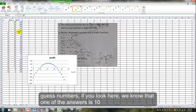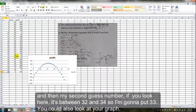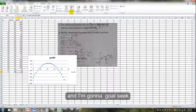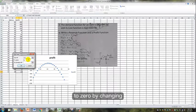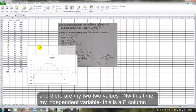My guess numbers, if you look here, we know that one of the answers is 10. And then my second guess number, if you look here, it's between 32 and 34, so I'm going to put 33. You could also look at your graph. I'm going to Goal Seek to 0 by changing cell A26. And there are my two values.